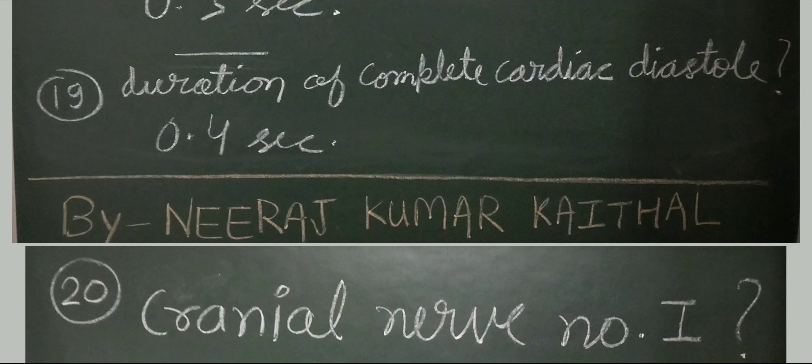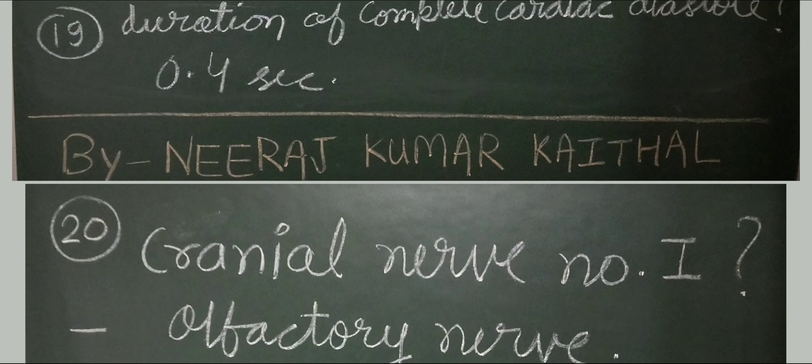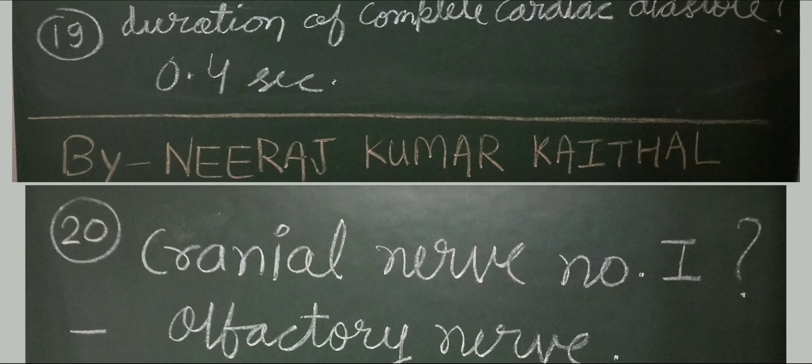Cranial nerve number 1: the olfactory nerve is known as cranial nerve number 1. If you are enjoying this video, please click the like button. This video's PDF will be available after publishing on our Telegram channel for nurses preparation. You can download the PDF from there.